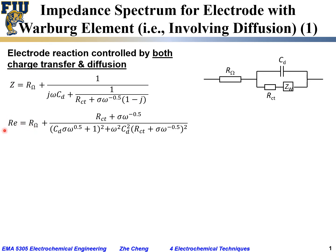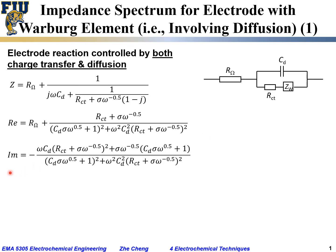After mathematical manipulation of this equation, the real part Z' equals R_ohm plus a complicated term shown here. The imaginary part Z'' equals minus another complicated expression. Both the real and imaginary parts are functions of charge transfer resistance, the sigma term, angular frequency ω, and the double layer capacitance. The real part also depends on the ohmic resistance R_ohm.